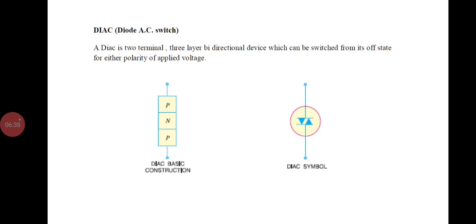Next one is the diac. The diac is a two-terminal, three-layered bidirectional device which can be switched from off state for either polarity of applied voltage. The diac can be constructed in either NPN or PNP form. The two layers are connected to P-type silicon separated by an N region. The diac structure is similar to that of the transistor, but there is no terminal attached to the base layer. The three regions are nearly identical in size and doping concentration, giving the device symmetrical properties.